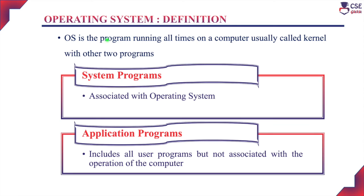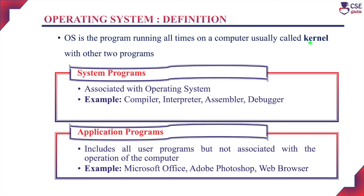The definition of operating system: it is a program running all the time on a computer, usually called the kernel, along with two other programs — the system program and the application program. The kernel is the area where the operating system programs run, and it connects the system hardware with the application software. All privileged instructions are executed only in kernel mode.